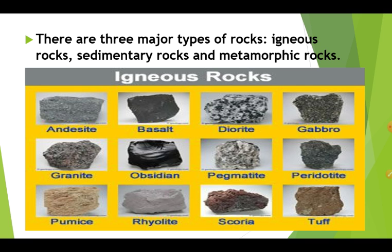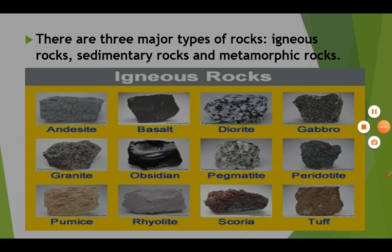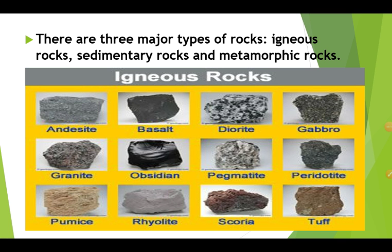We define three major types of rock: igneous rocks, sedimentary rocks, and metamorphic rocks. Examples of igneous rocks include: andesite, basalt, diorite, gabbro, granite, obsidian, pegmatite, peridotite, pumice, rhyolite, scoria, and tuff.